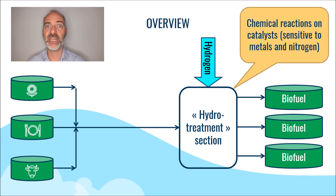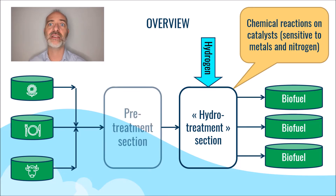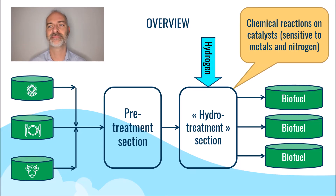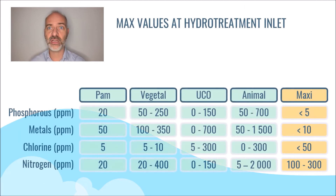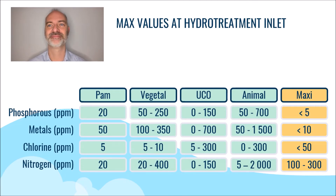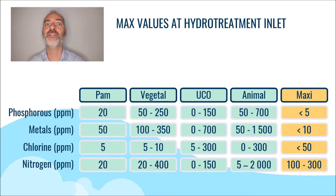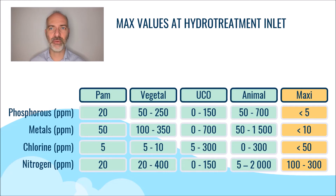A pre-treatment section is used to remove all kinds of contaminants described earlier in the MOOC. Depending on the feedstock, we will necessarily have to remove a good part of the phosphorus, metals, chlorine, but also nitrogen. The values shown here in orange are the maximum acceptable values at the entrance of the hydrotreatment unit — typical values that may vary depending on the design of the downstream unit.